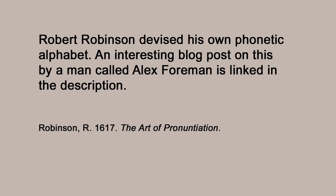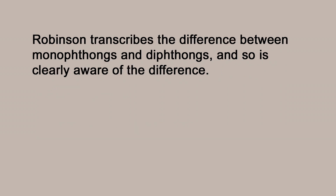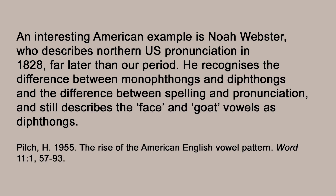Robert Robinson, writing in 1617, even came up with his own phonetic alphabet to write English, made completely different from the Latin alphabet, just so that English spelling didn't cloud his judgment of how things were pronounced. He clearly understood the difference between a monophthong and a diphthong, and he placed the 'face' and 'goat' vowels as long monophthongs — vowels where your tongue and lips stay in the same place the whole time. Other grammarians from near 1700 agree with him.